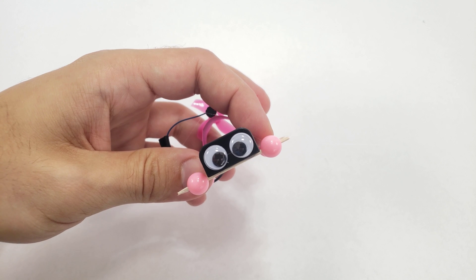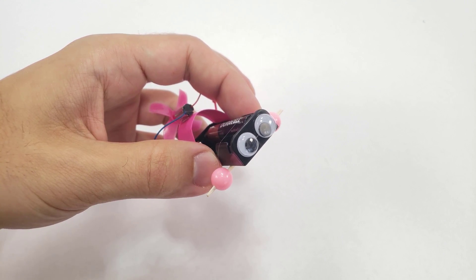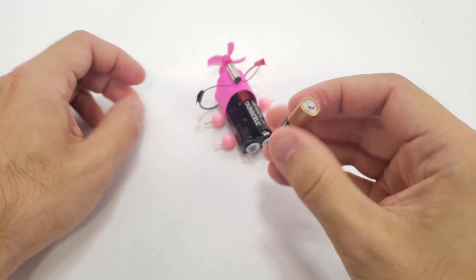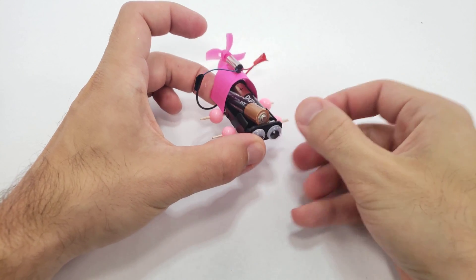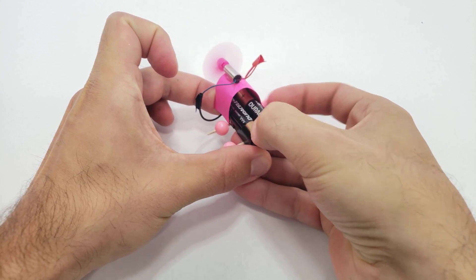Optionally, you can add googly eyes or other decorations to your car. To start your car, simply put in the second battery. Watch your fingers on the propeller because it will start spinning right away.